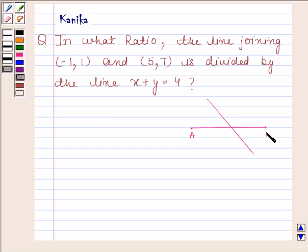Suppose AB is the line which is formed by joining points (-1,1) and (5,7). This is the line whose equation is x plus y equals 4. This line is intersecting this line at point P and dividing this line in some ratio, and we have to find the ratio in which this line divides AB.